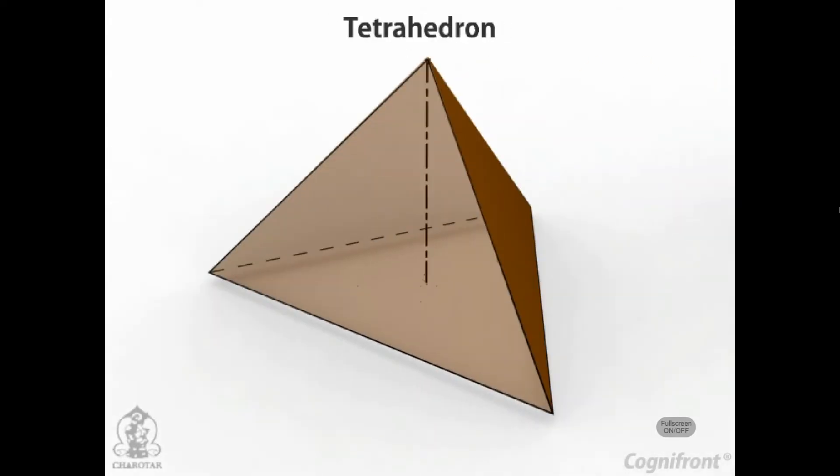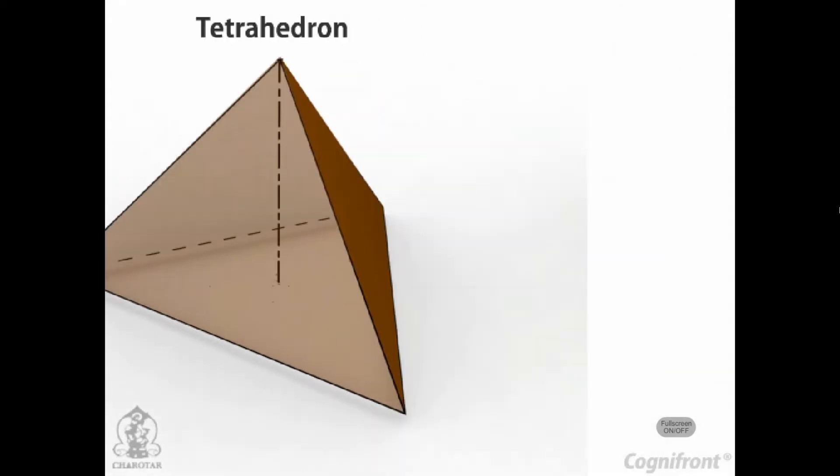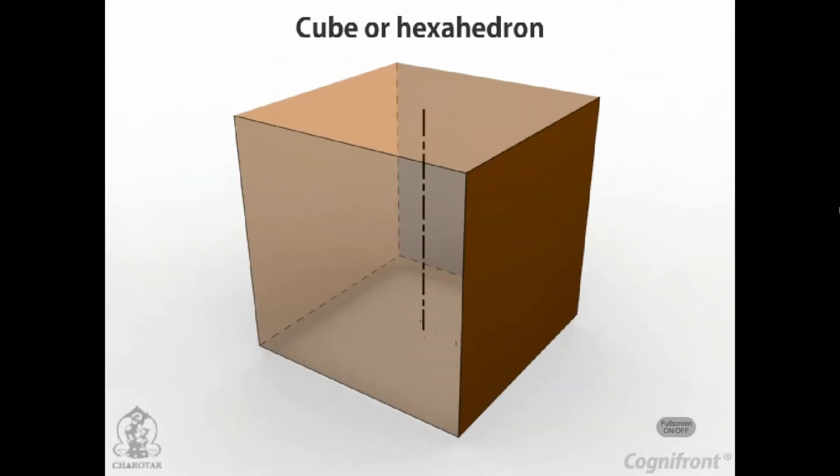Tetrahedron: It has four equal faces, each an equilateral triangle. Cube or hexahedron: It has six faces, all equal squares.